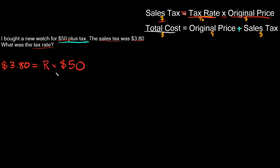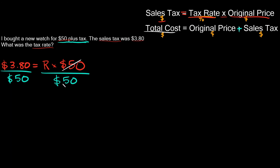To solve for R, since we're multiplying, we divide both sides by fifty. The fifty on the right cancels out, leaving R equal to 3.80 divided by 50. Plugging that into the calculator: 3.80 divided by 50 equals 0.076.